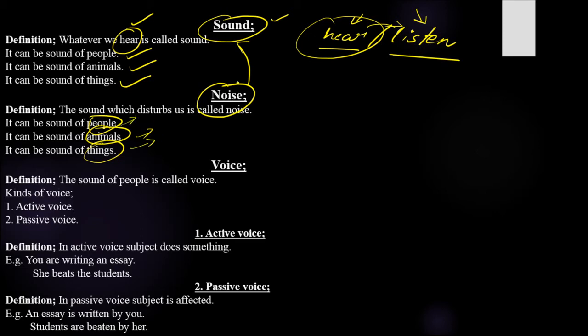In the same way, the sound of things can also produce noise. For example, at a marriage party there is beating of drums — that may be enjoyment for them but a disturbance for others. Even the sound of a coil that brings disturbance is known as noise. Now we will move towards our main topic, which is voice.